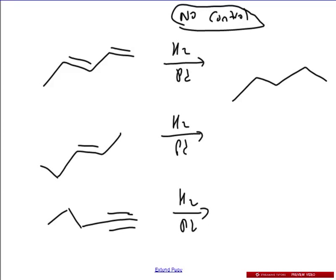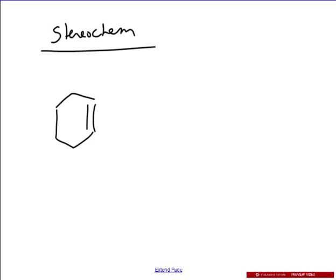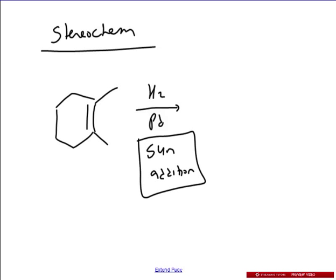So let's talk about the stereochemistry for a moment. The best way to do it for now is in a ring. Let's say we have this structure here with H2 and palladium. Because this is a syn addition, meaning that the Hs are going to add from the same side, that means the answer is going to be syn — where if an H adds here on the wedge, then it must be over here on the wedge as well. Now, what does that mean for the methyls? Well, if the Hs are on the wedge, then the methyls are in the back.